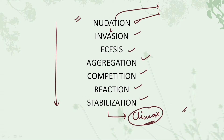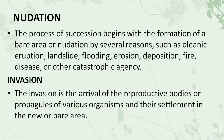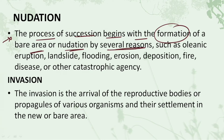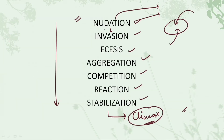So, what is nudation? Nudation simply means the preparation of a particular area — any area where the future climax community would be formed. How does this preparation occur? It can occur by any natural process. Nudation is the process by which succession begins with the formation of barren land, due to several reasons such as landslides, flooding, erosion, deposition, fire, and so on. Due to any of these processes, the formation of bare land starts in the area where succession is to occur.